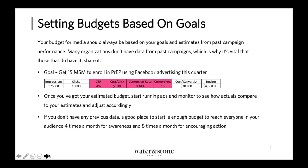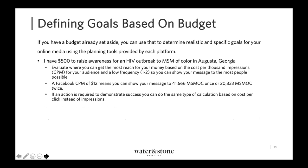Trying to generate awareness is one thing, but trying to get someone to take an action takes a lot more impressions. I usually double it — so I'd suggest estimating eight impressions if you want them to fill out a form, call a phone number, or get directions to a clinic. These are just general ballparks to help you folks; obviously every location is going to be different. This is one way you can work back out to what your budget should be to achieve that goal.